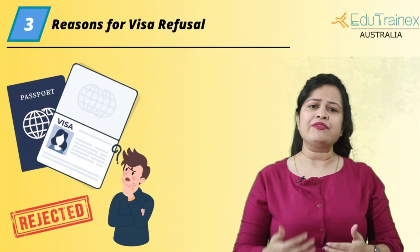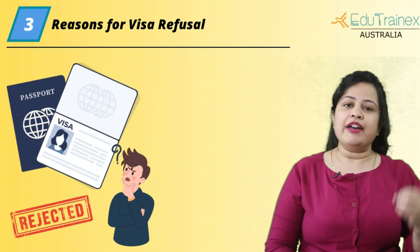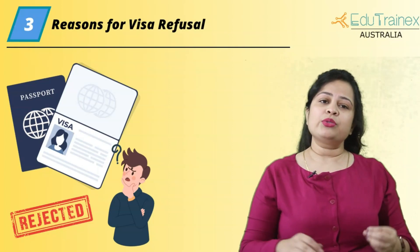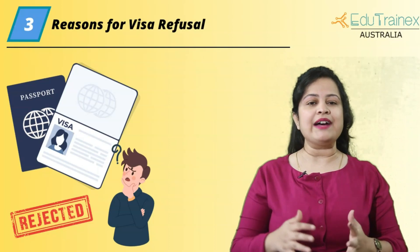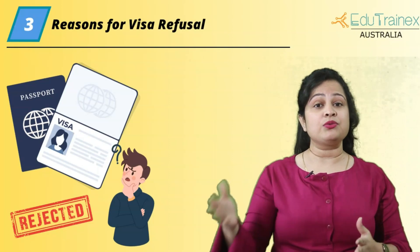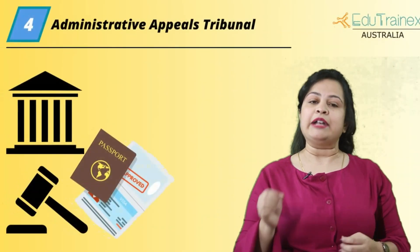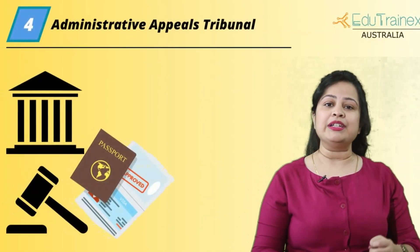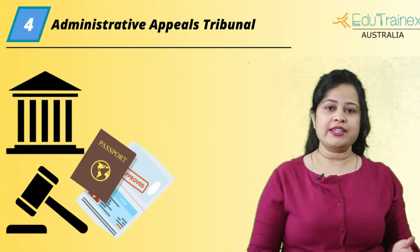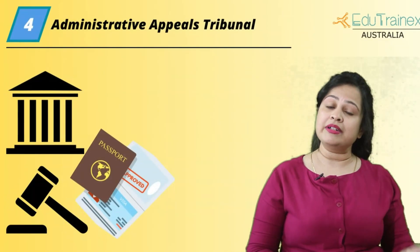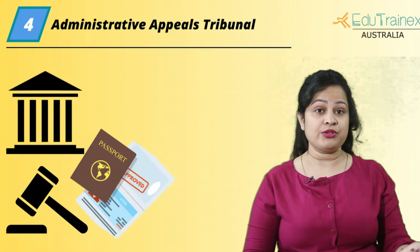Now, what to do after student visa refusal? If an Australian student visa gets refused, students have the right to appeal to the AAT — that is, the Administrative Appeals Tribunal. Within 28 days of student visa rejection, you must submit the appeal letter for reconsideration.